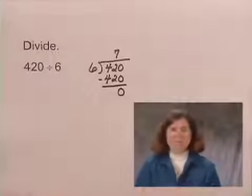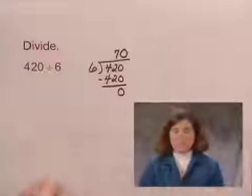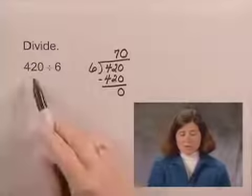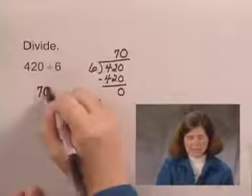Now we can't just leave the number 7 because that was 7 tens, so we have to write a 0 in the quotient as a placeholder. So the answer to 420 divided by 6 is 70.